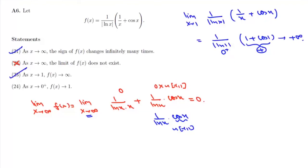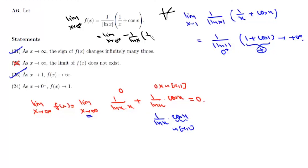Taking the limit as x→0⁺ of f(x): when x is approaching 0 from the positive side, log x is negative, so |log x| = -log x. This gives -1/(log x · (1/x + cos x)). Since log 0 = -infinity, this value approaches infinity, so Statement 24 is also incorrect. Therefore the correct statements are 21 and 23.